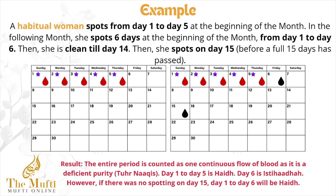The Tuhre Naqis — deficient purity — plays a very important role because it can change the whole view of hayz. If a woman doesn't understand the law of Tuhre Naqis, she'll say her hayz habit has changed to 6 days whereas it's actually 5 days. She won't perform those salahs that she has to repeat on day 6, saying it was a day of hayz. But retrospectively, if she didn't perform salahs on day 6, she will have to repeat and make qaza of those salahs.